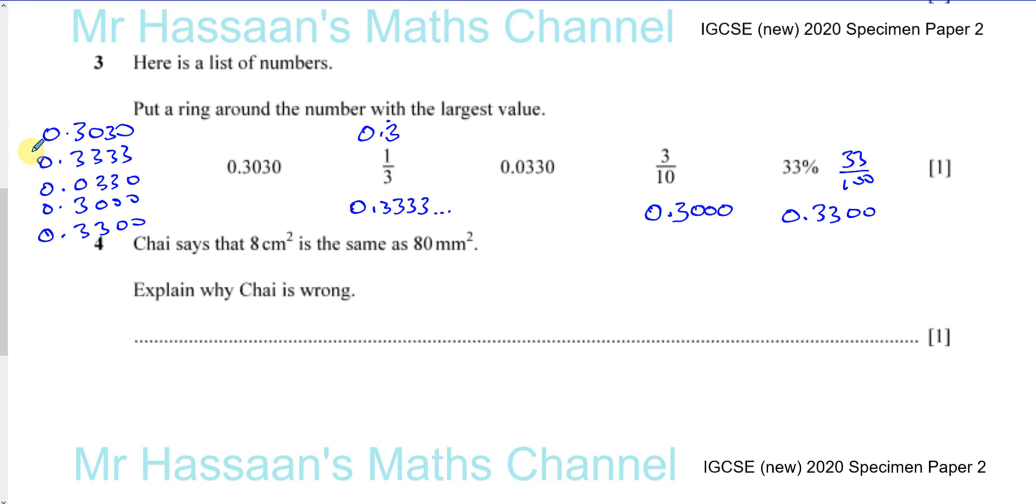So we can see the one that has the biggest value is going to be 0.33333, which is corresponding to 1/3. So I'm going to put a ring around. Let's put a ring around the number with the largest value. So to compare them, write them as decimals, and then see which one is bigger. This one, you can see, obviously, is the biggest one.